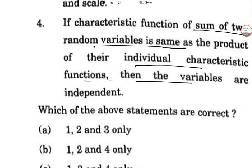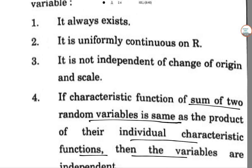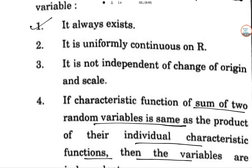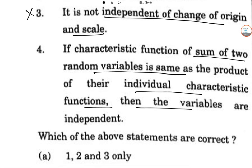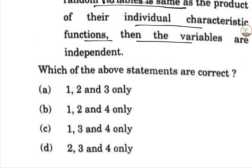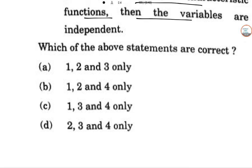Okay. So let us have a look. One is definitely correct—it always exists. Uniformly continuous is obviously correct. But it is not independent of the change of origin and scale; it is dependent. So the third one is wrong. The fourth one is also correct. So this is actually option number 1, 2, and 4. B is correct.